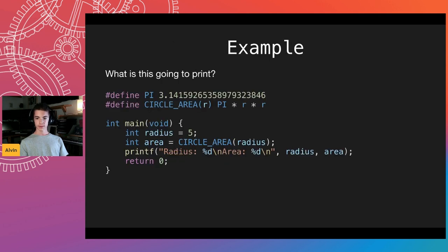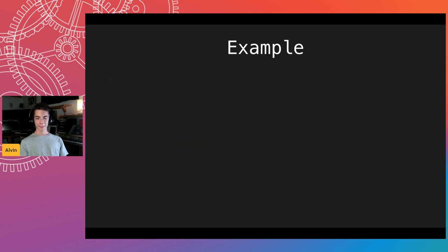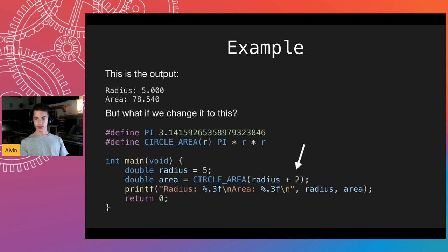This is a more complex example. It takes the same macros and calls them. Macro calling looks like a function call, but it's actually replaced by the preprocessor. What do you think this is going to print? You don't have to pull out your calculators. This is the output — and that's correct. But there's a problem: if we add plus two in this position, it doesn't output what we expect.